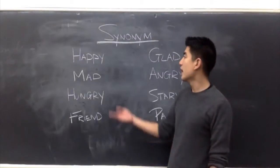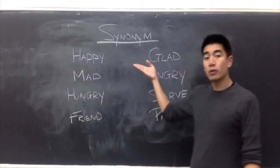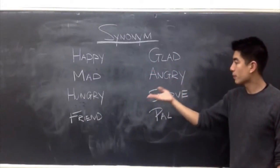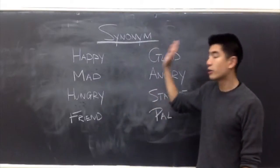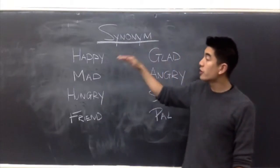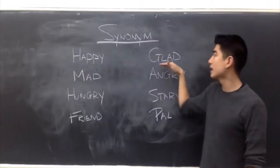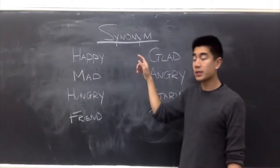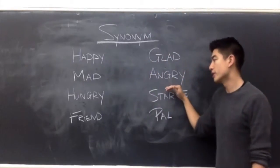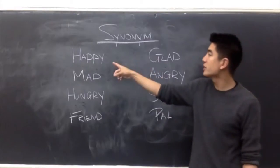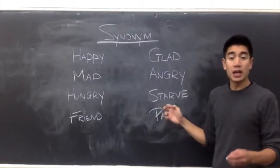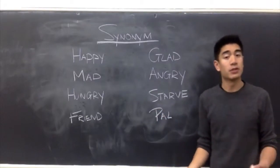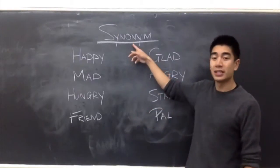What I did here was I put down eight word examples in two columns, left column and a right column. In the first row, happy and glad are synonyms, as well as mad and angry. I will connect these two with a line to show that there's a connection between the two words. Although they're different words, they have similar meanings. Therefore, it is a synonym.